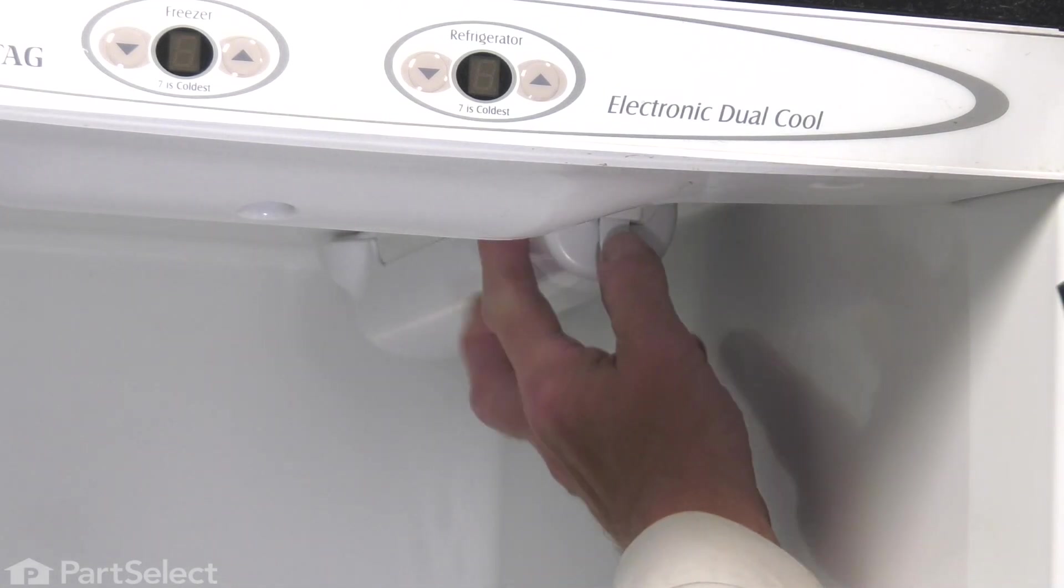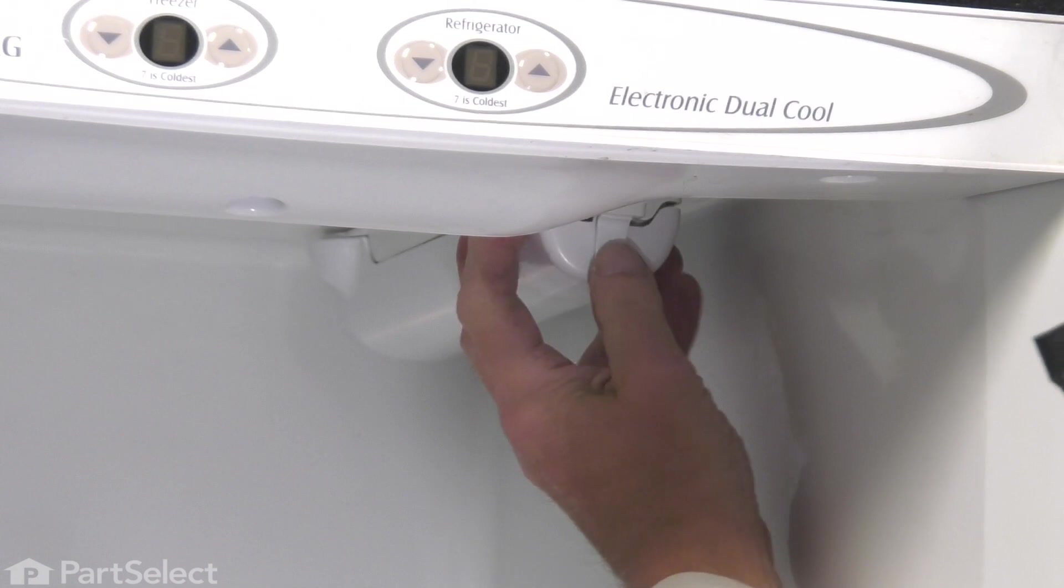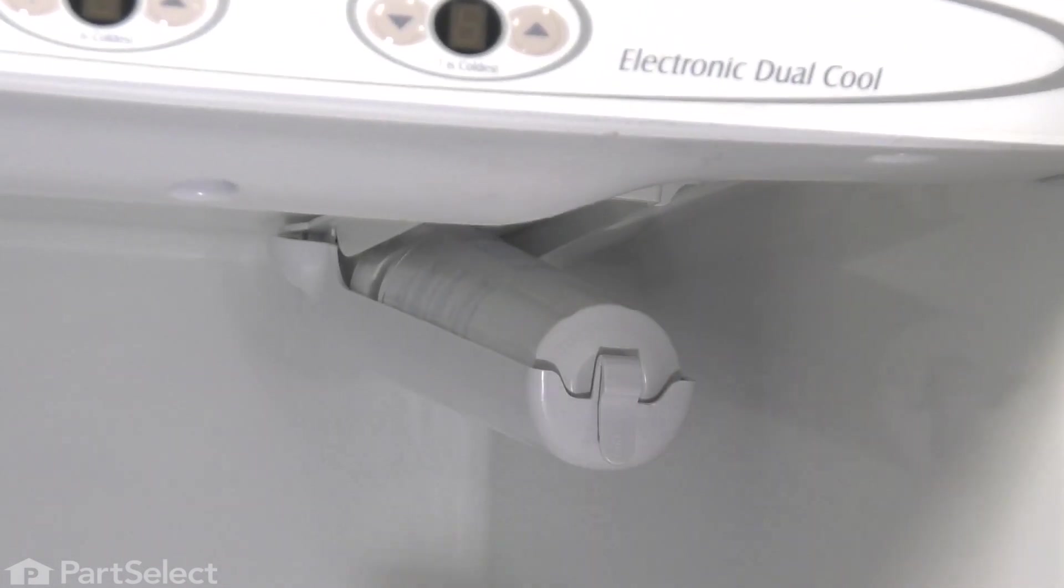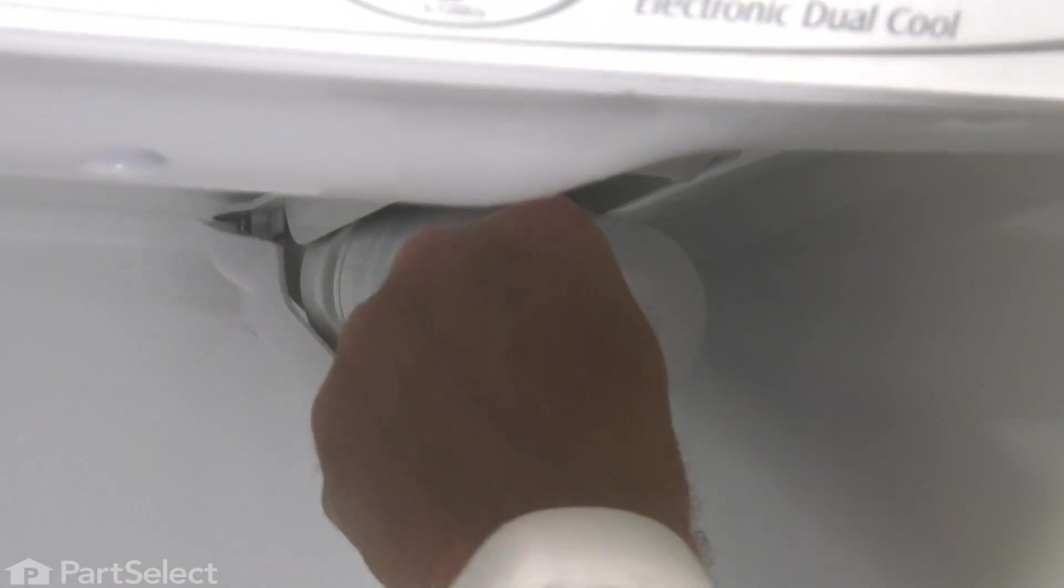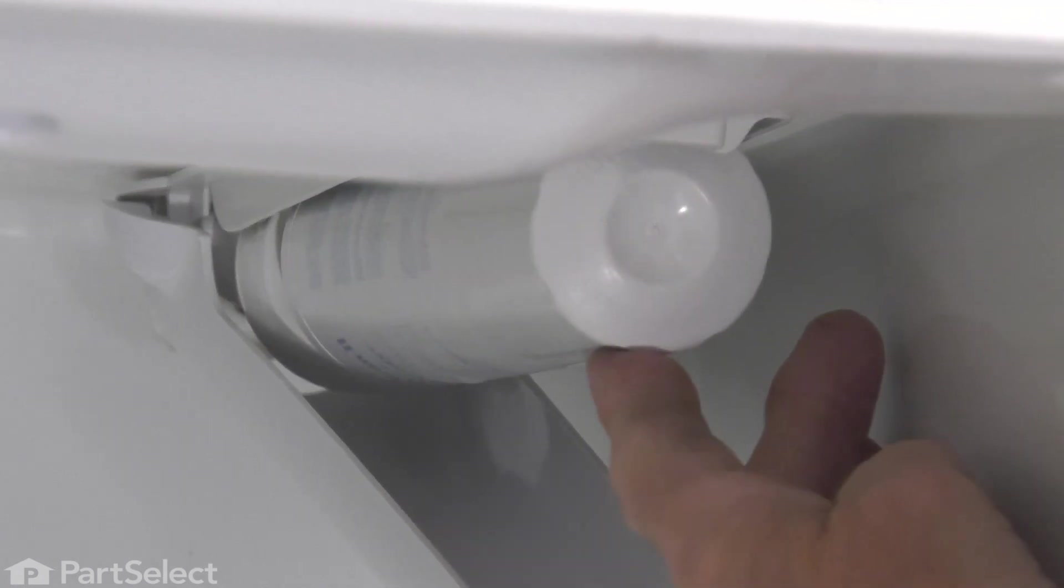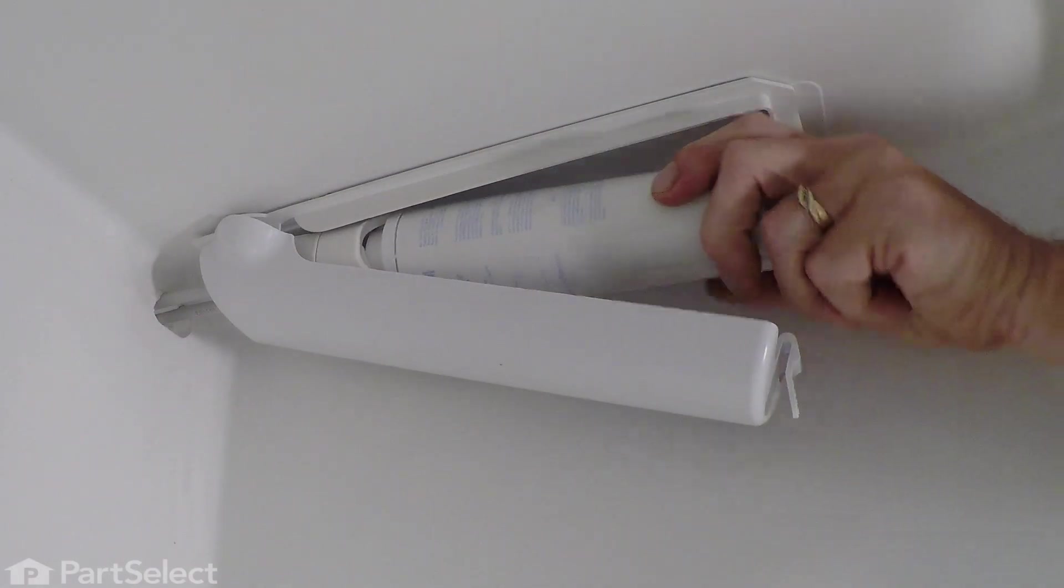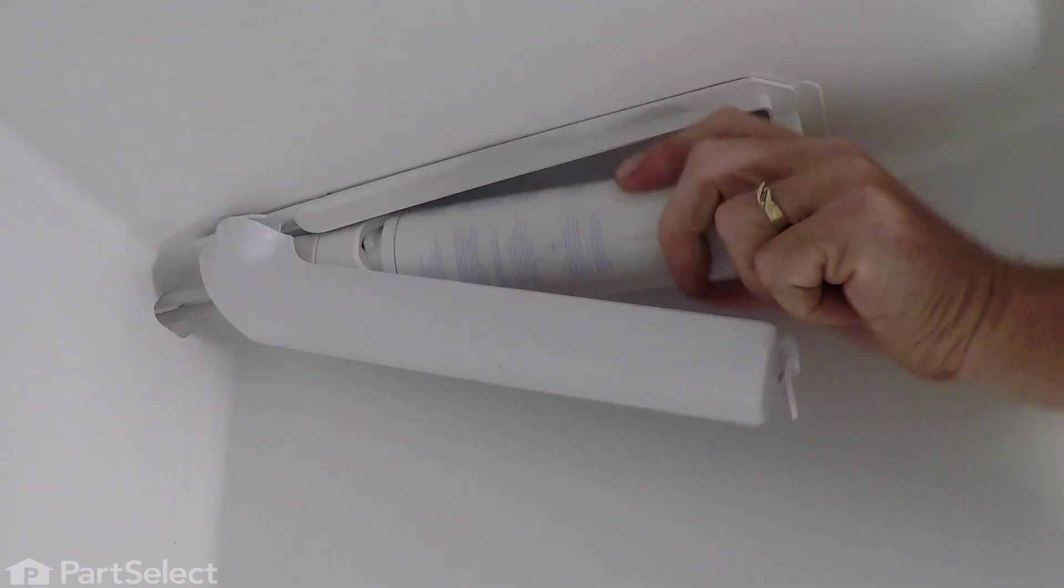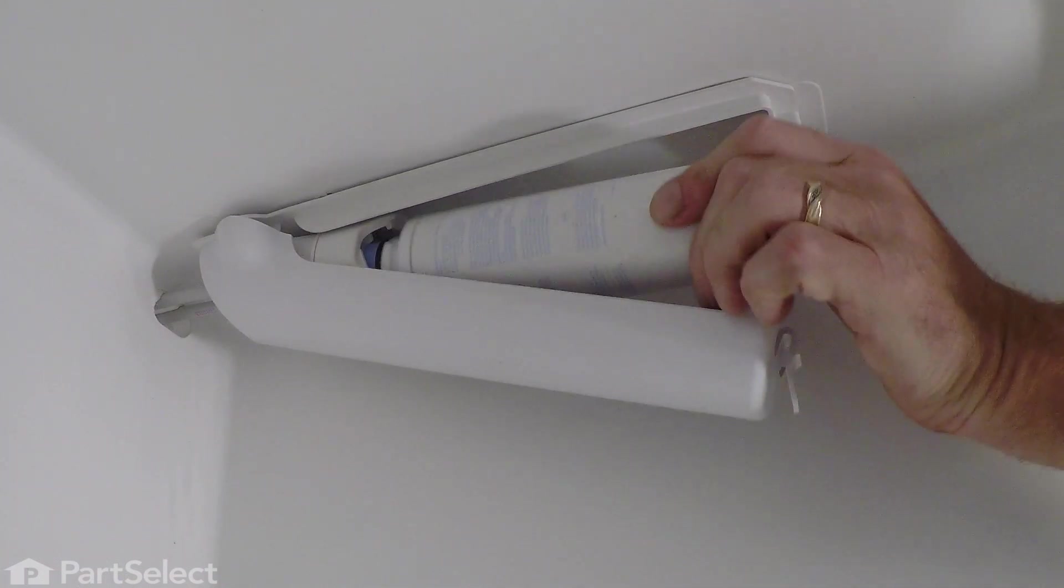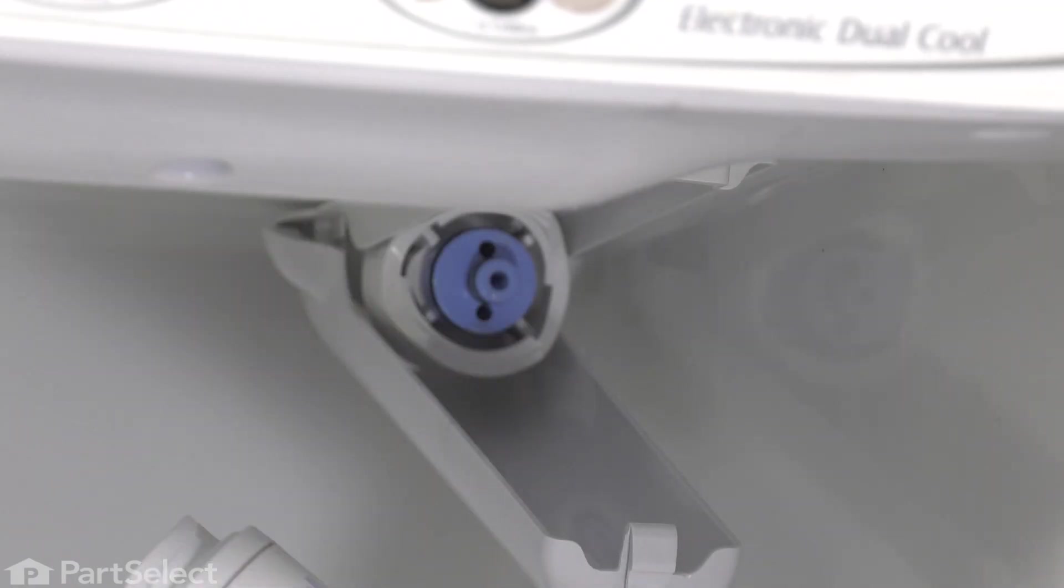our next step will be to lower the cover to the water filter. Just press that tab, lower that down, and then we'll remove the old water filter. We're simply going to twist counterclockwise about a quarter of a turn and remove the filter.